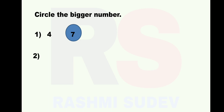Second sum: 2 and 8 are the given numbers. Tell me which is the bigger number. Right answer - it is 8.